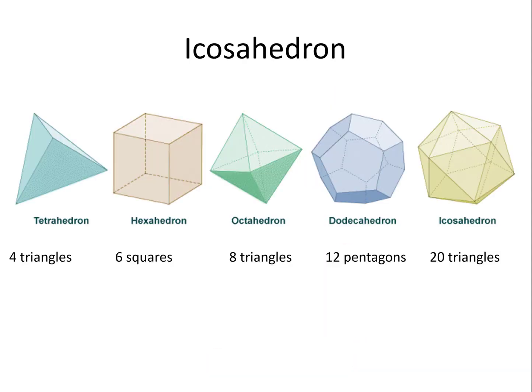Polyhedron. Polyhedrons are 3D shapes where every side is the same shape. For example, a tetrahedron has 4 triangles, a hexahedron has 6 squares, an octahedron has 8 triangles, a dodecahedron has 12 pentagons, an icosahedron has 20 triangles.